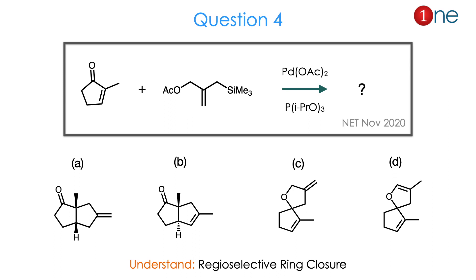Then question number 4. The starting material is a cyclopentenone with a conjugated alkene and a methyl group at the second position. You react it with an alkene bearing an acetate and a silyl group, using palladium and isopropoxide. The question asks for the product: a fused ring system or a spiro ring system — and if fused, whether it is cis- or trans-fused; if spiro, whether the alkene is endo or exo. The question is about regioselective ring closure. The answer is A.